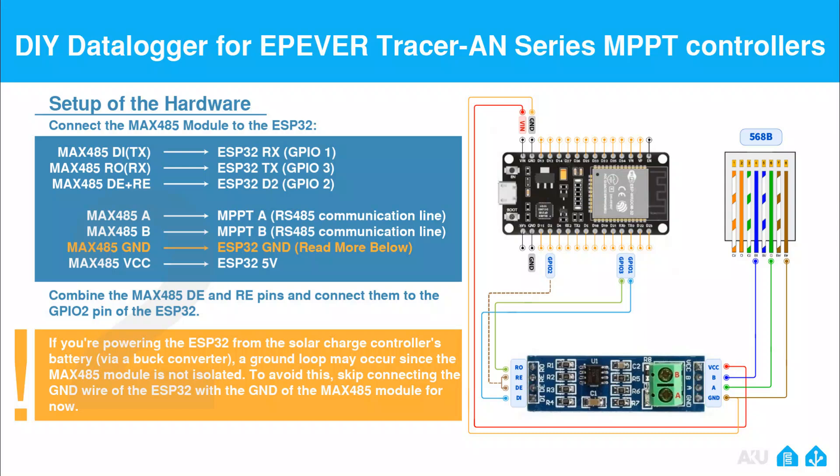Cut the Ethernet cable from one end and extract the three wires shown in the diagram. Make sure the wiring layout matches the reference image exactly, then connect those three wires to the MAX485 module as shown.